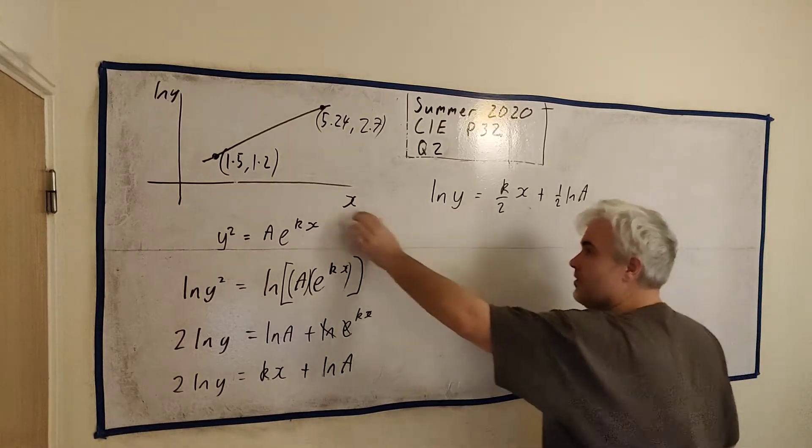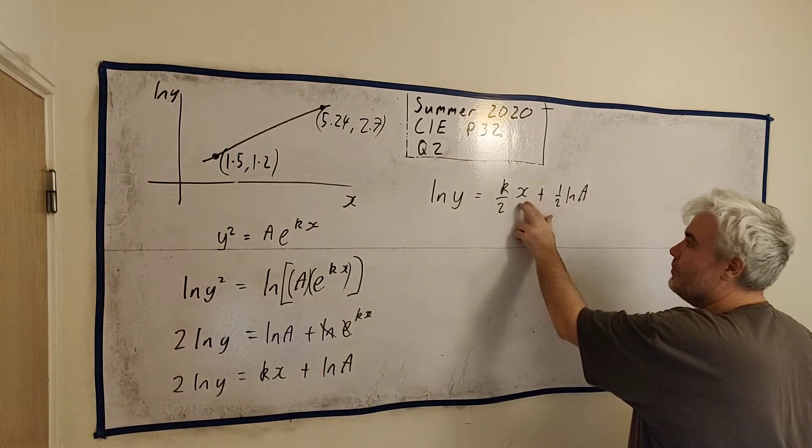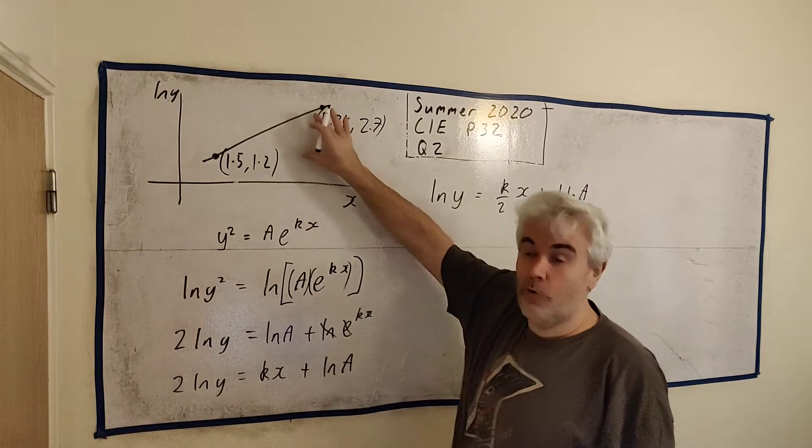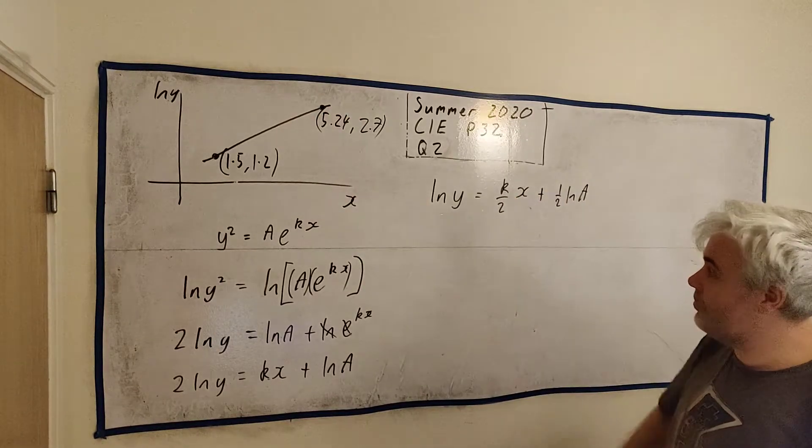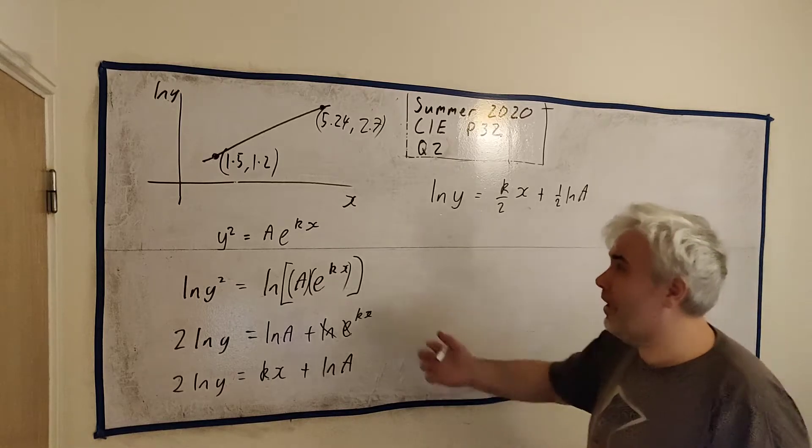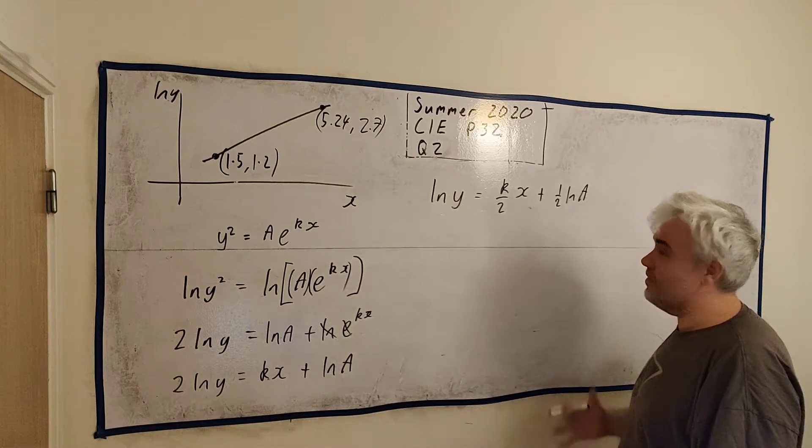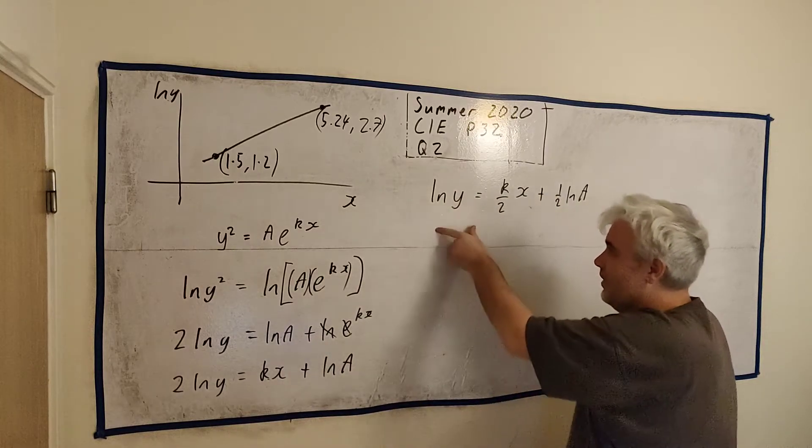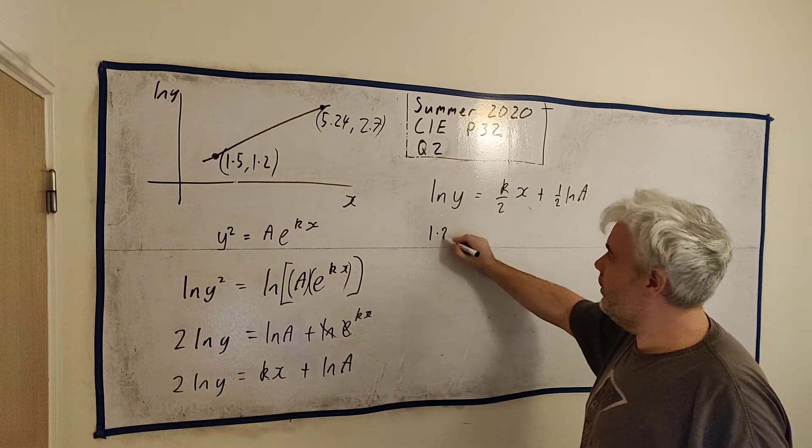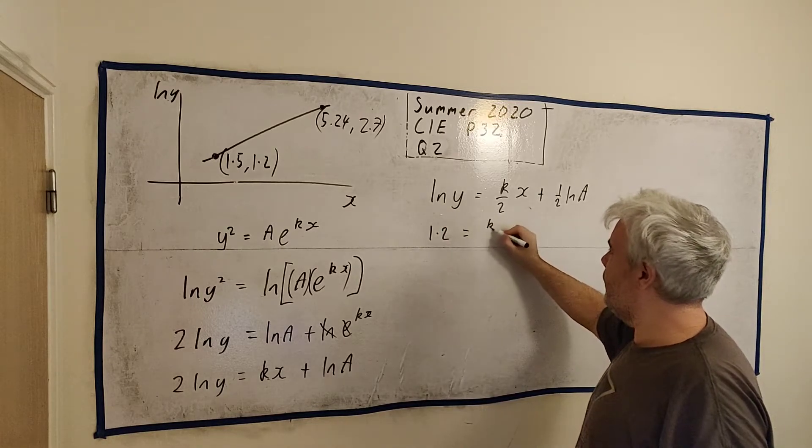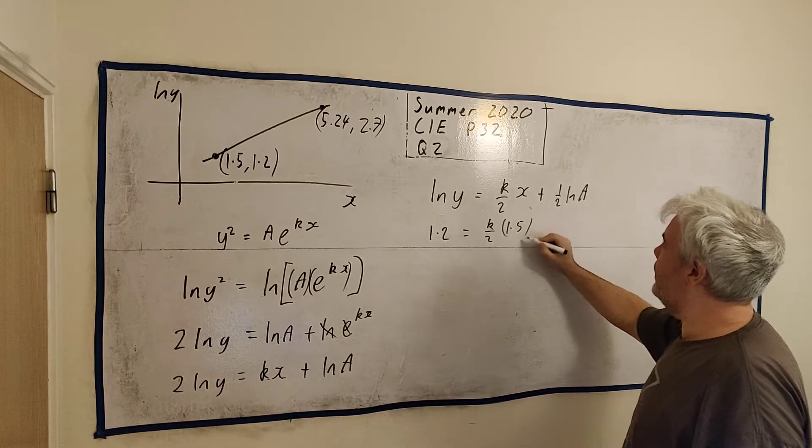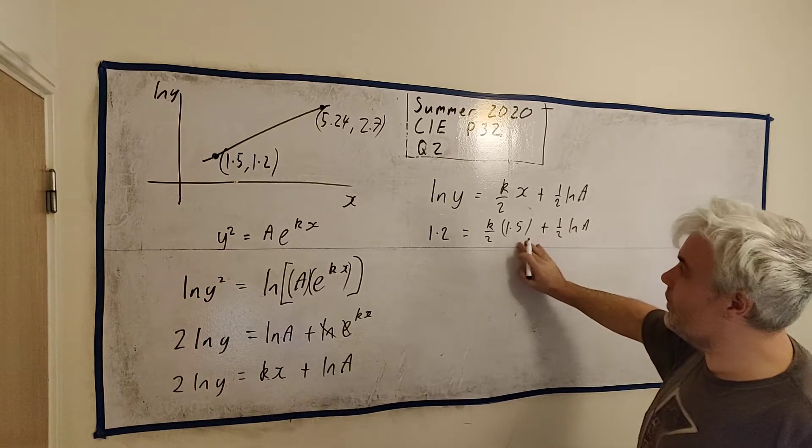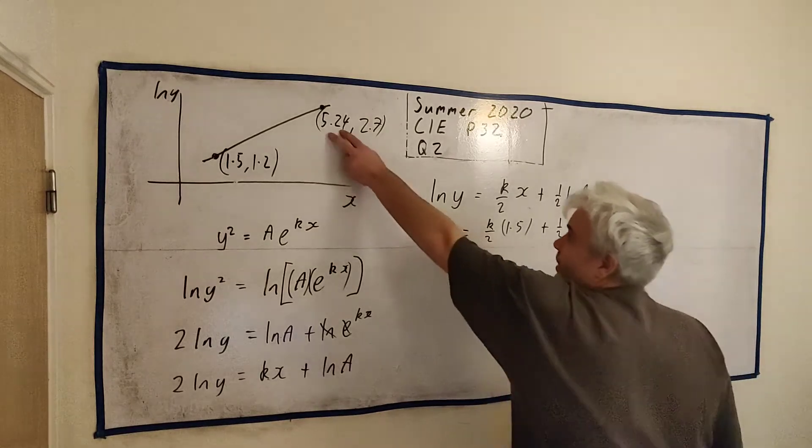So this is just like a line. We have the y-axis, y-axis is equal to something times the x plus something. So a couple of ways we could do this now, we could find that slope out because the slope is actually equal to k divided by 2. Or how I'm just going to put these numbers in. I'll just go ahead and put these numbers in. I know 1.2 is equal to natural log of y, that's equal to k over 2 times x is 1.5 plus half natural log of a. That's something I know from just these two numbers there. I can also put these two numbers in. I get 2.7 is equal to k over 2 times 5.24 plus half natural log of a.